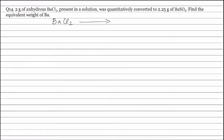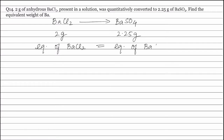Barium chloride is converted to barium sulfate. The weight of barium chloride is 2 grams and the weight of barium sulfate is 2.25 grams. According to the law of equivalents, equivalence of barium chloride is equal to equivalence of barium sulfate.